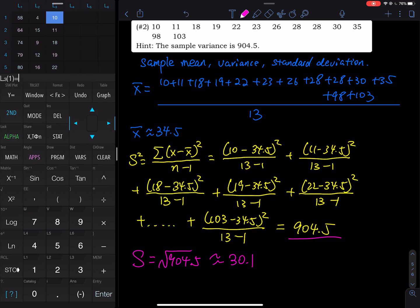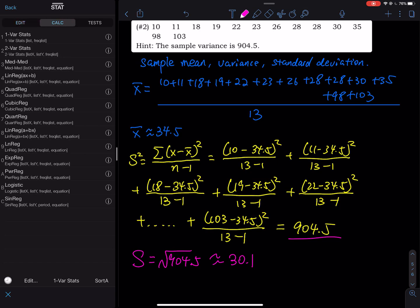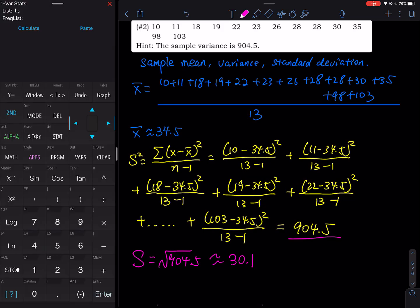And then we are going to exit this screen. So we click second mode to exit. And then we are going to do the computation. So you go to stat. This time you are going to go to calc. Hit the right arrow, go to calc. And then you select the first one, one variable stat. I put my data in L3, so I will clear my L2 and then hit second 3. So that will be my L3.